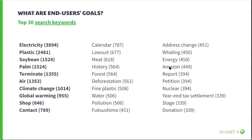If we take a closer look at what users exactly search on P4 sites via top search keywords, we can see that these keywords match user goals when it comes to looking for specific information — for instance, electricity, plastic, soybean, farming, etc.